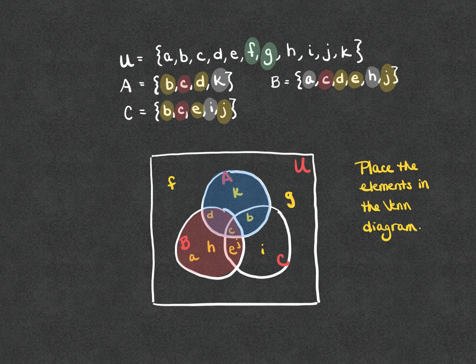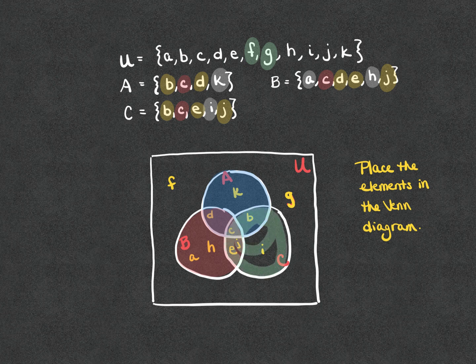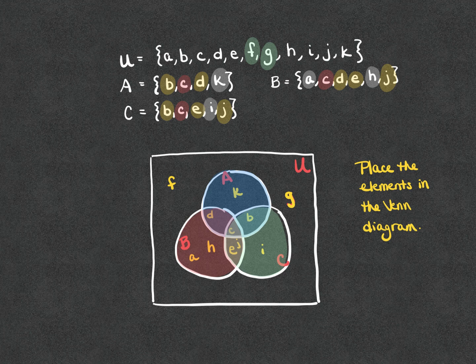Elements D and C are the only two shared between subsets A and B, which is why they fall in that overlapping region. Finally, if I highlight subset C, the elements included are B, C, E, I, and J — those are the elements in set C. So as you go through this, whenever you look at where an element is positioned within the Venn diagram, you do need to look for overlapping regions, because those tell you that those elements are in the intersection of those subsets.